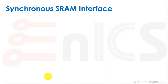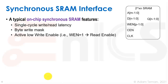A typical off-chip synchronous SRAM features a single-cycle read/write latency — we prepare the data, the rising edge of the clock occurs, and after one cycle the SRAM has either read out the data after a propagation delay or successfully written data to the selected word. It also has a byte write mask, meaning we can write a single byte out of the entire selected word, and usually an active-low write enable — when write enable equals 1 we are actually doing a read.